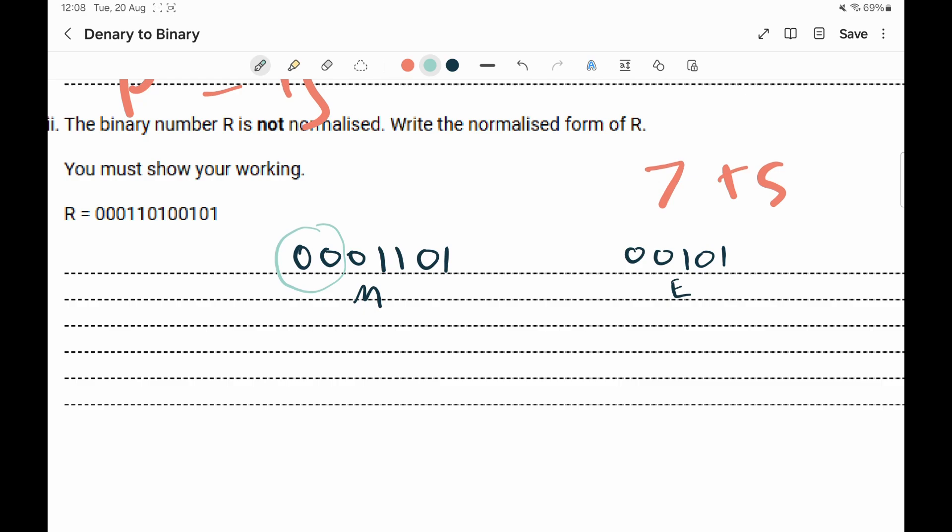So to do that, what we can do is we can just move these two here. So this number, the mantissa, becomes 0, 1, 1, 0, 1, but because it needs to be seven numbers, we need to keep those two zeros, so that becomes a mantissa.